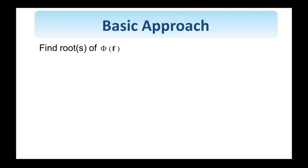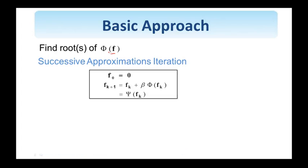So we start by formulating the problem of interest as that of finding the roots of a function φ of f. So f is the image represented as a vector and φ is a function that I want to find its roots. So according to this successive approximations iteration shown here I start with f₀ = 0 and then at the k+1 iteration step the image is equal to the image that we obtained at the previous iteration step k plus β a relaxation parameter times φ of f_k. And I can combine everything into this function ψ of f_k.